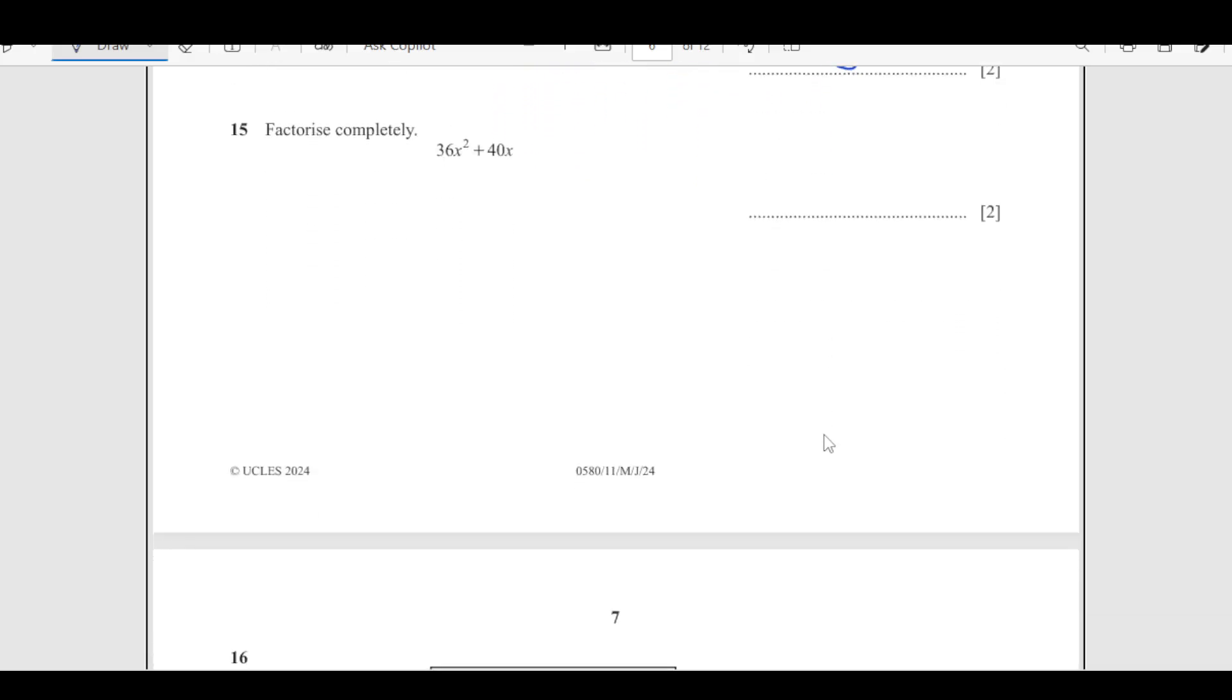Factorize 36x squared minus 40x. As you can see, both are multiples of 4. We can take 4x is in both. 4 times 9 is 36 and here it will be 10. So this is 4x into 9x plus 10.